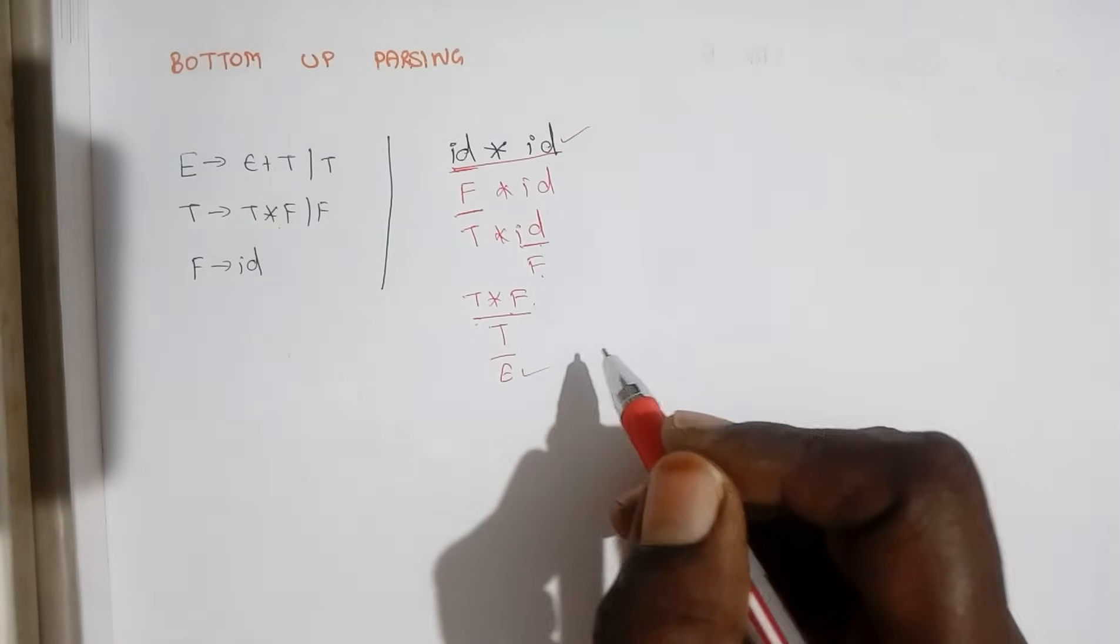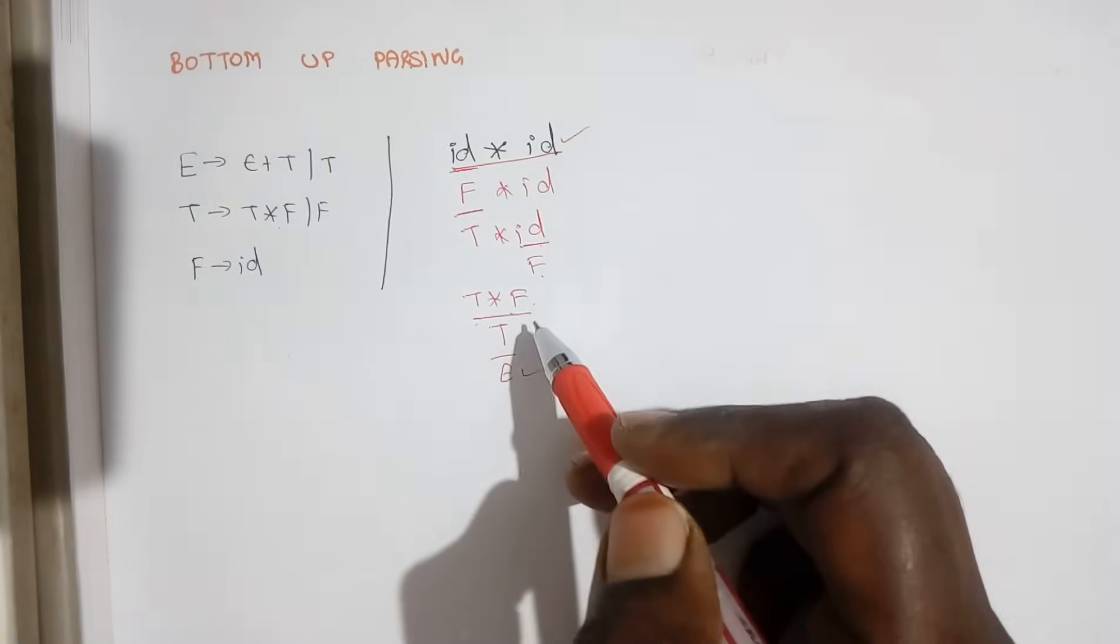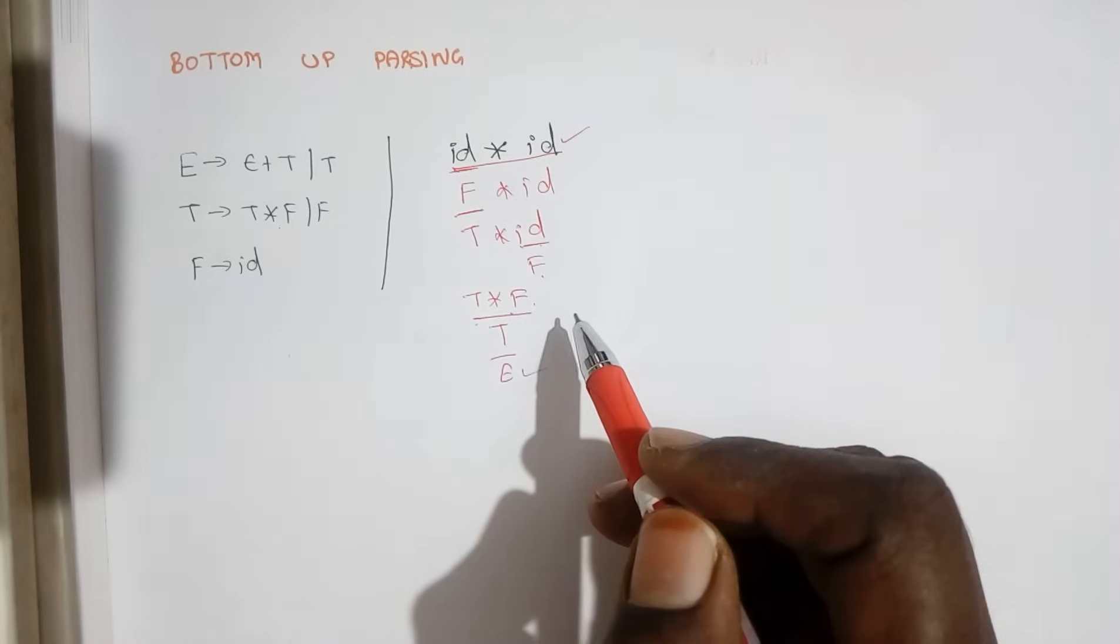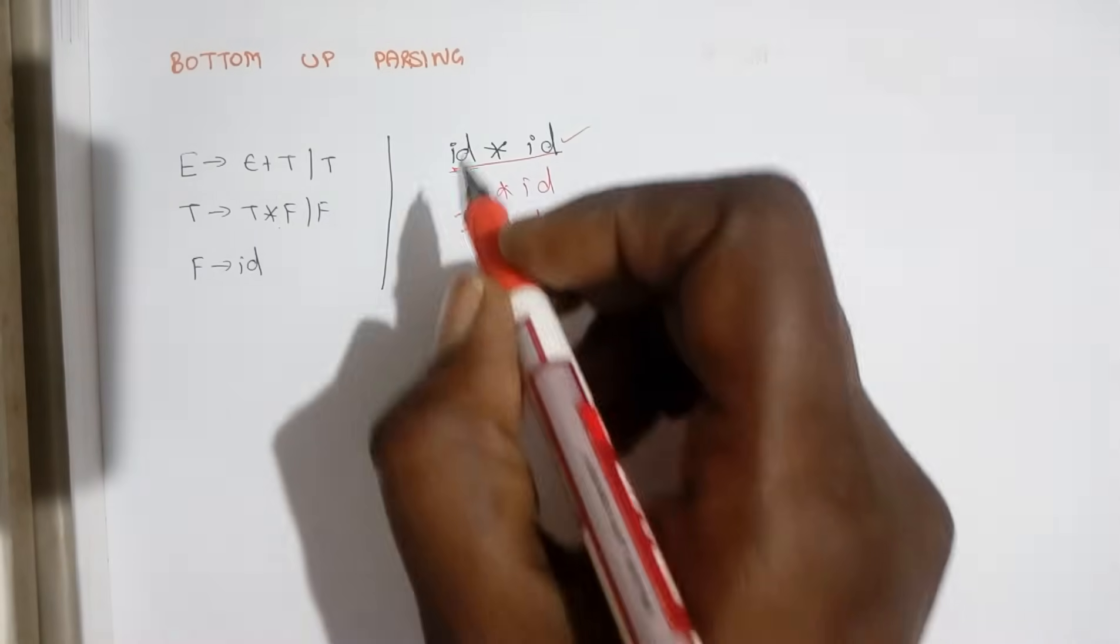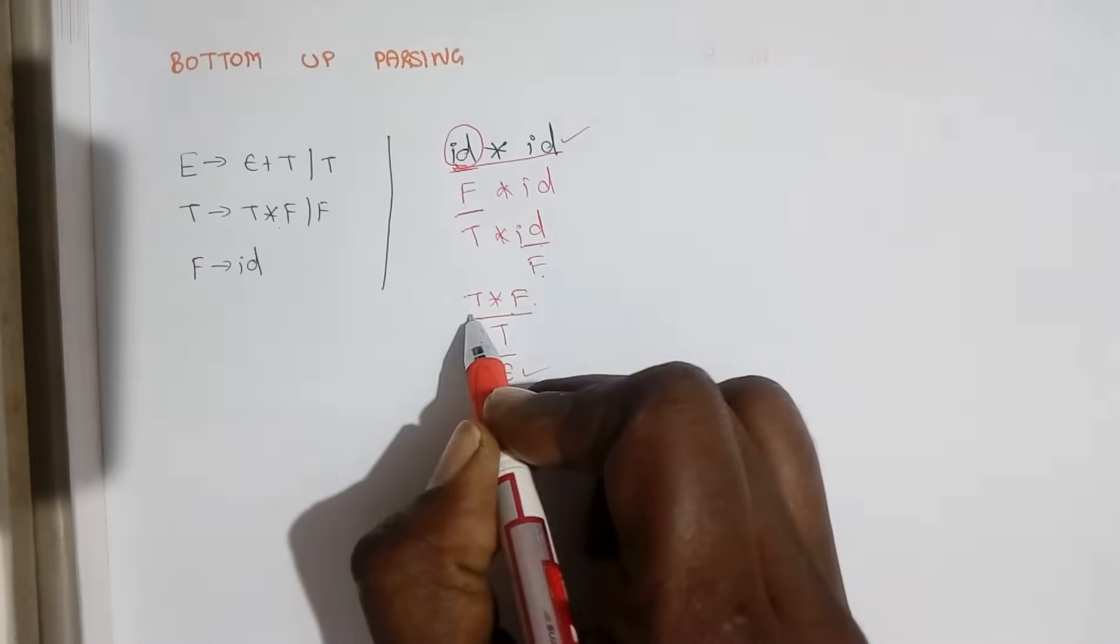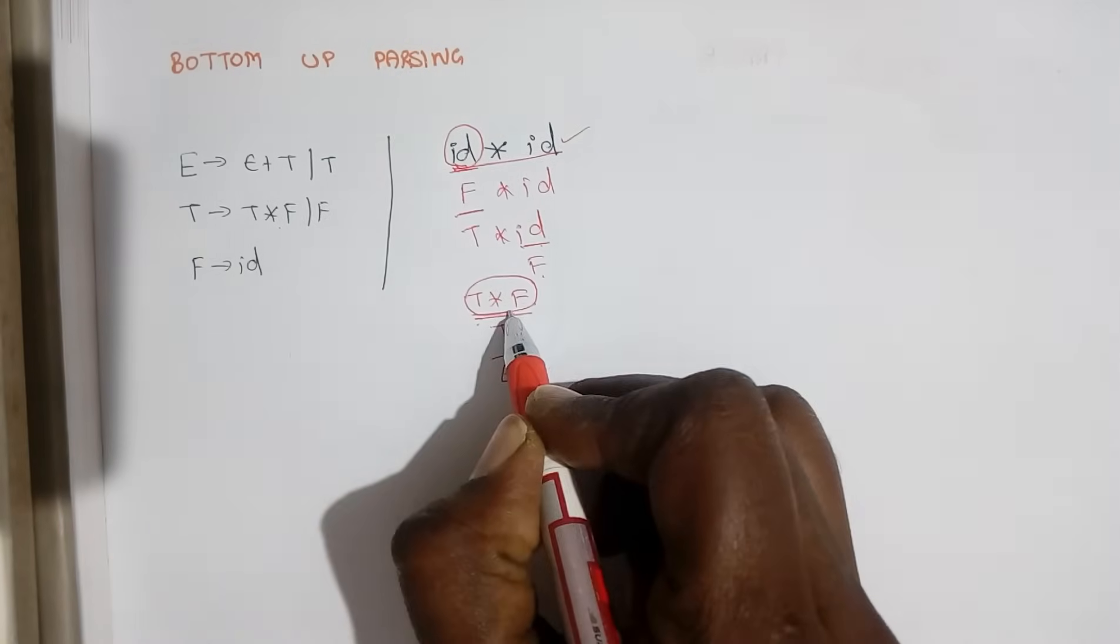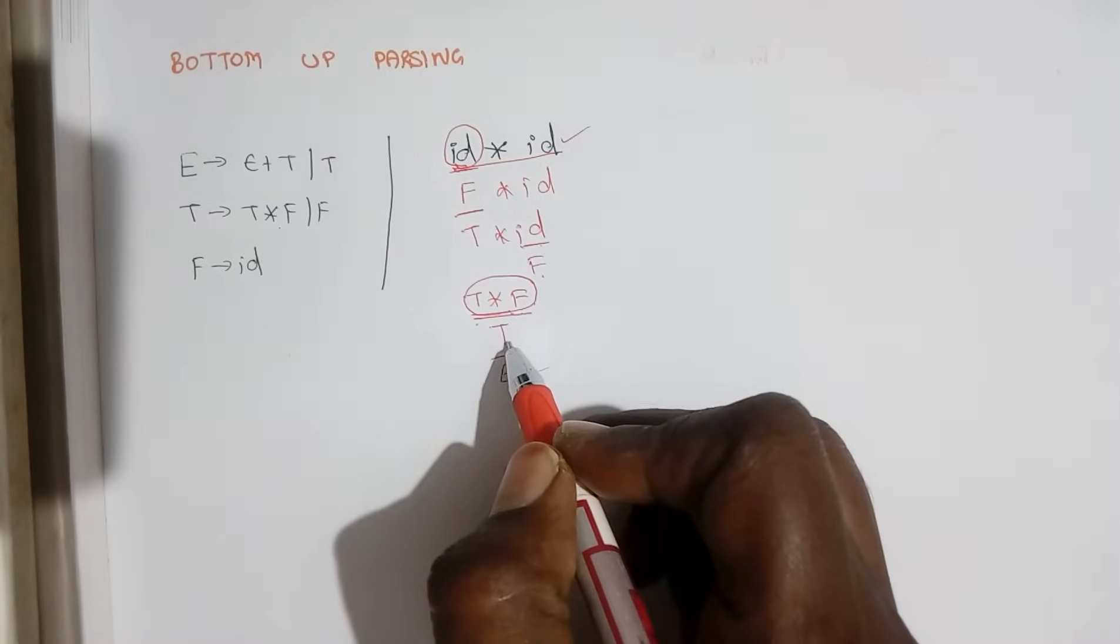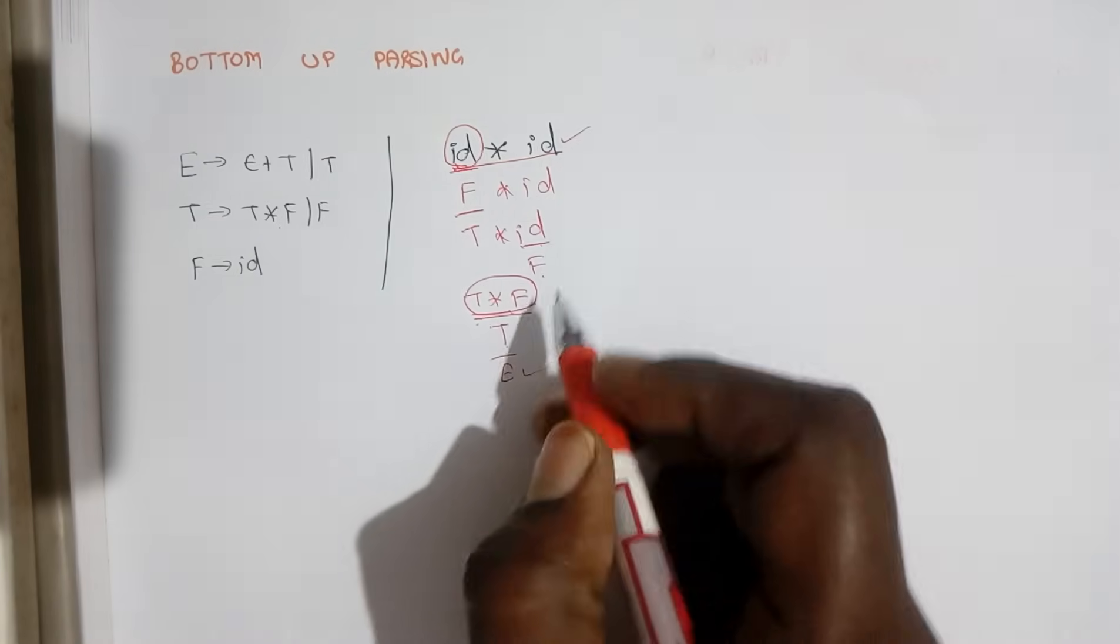And here we have used reduction process, this process is called reduction. In the process of reduction, each time we take a single element or some set of elements and we apply this production over here, we reduce this to a variable. So this is called handle.